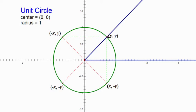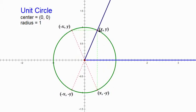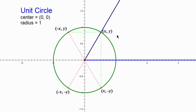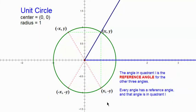Not to sound like an old man, but back in my day we didn't have calculators, so finding the sine and cosine meant looking it up in a table that only went from 0 to 90 degrees. So if I had another angle, I'd have to find the corresponding quadrant one angle — and this is called the reference angle. Every angle has a reference angle, and that angle is always in quadrant one.